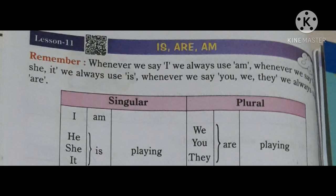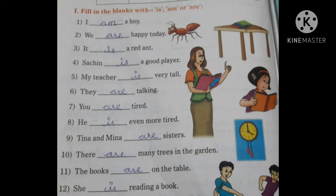Let's begin now. 'I am a boy.' — 'am' is in singular form. 'We are happy today.' — 'are' is in plural form. 'It is a red...' — 'is' is in singular form. 'Sachin is a good player.' — 'is' in singular form. 'My teacher is very tall.' — 'is' in singular form.